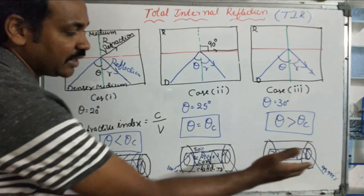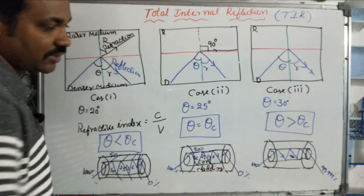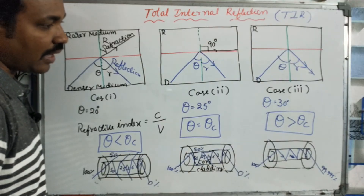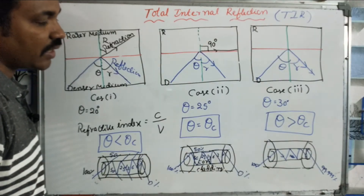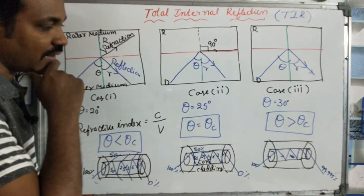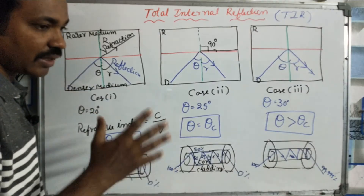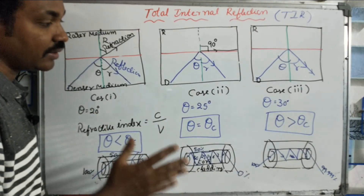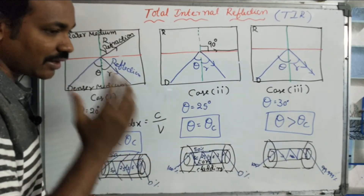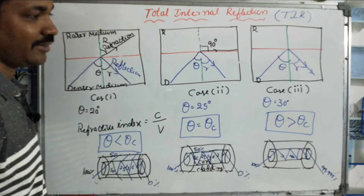If we consider it 100 percent input, nearly 100 percent of the signal is transmitted through the optical fiber. This is a signal. In optical fiber communication, total internal reflection is very important.